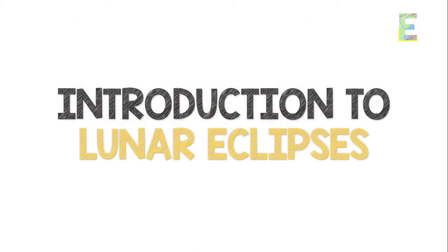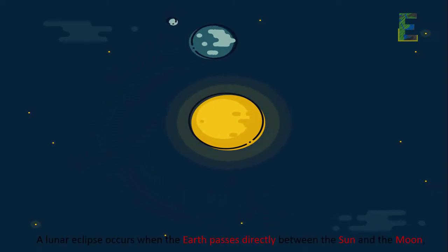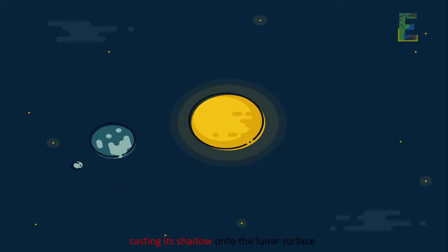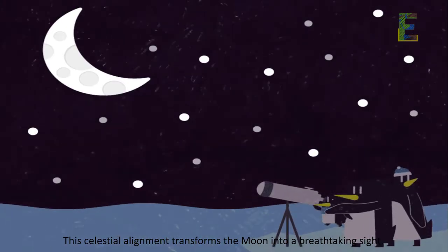Introduction to Lunar Eclipses. Let's begin with the basics. A lunar eclipse occurs when the Earth passes directly between the Sun and the Moon, casting its shadow onto the lunar surface. This celestial alignment transforms the Moon into a breathtaking sight.